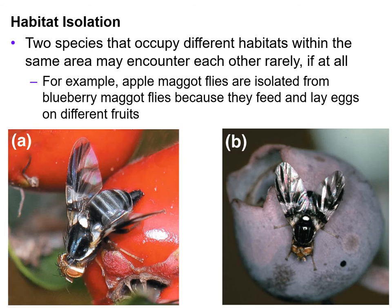The first one is habitat isolation. Two species that occupy different habitats within the same area may encounter each other rarely, if at all. An example is the apple maggot fly and the blueberry maggot fly. Apple maggot flies are isolated from the other because they feed and lay eggs on different fruits — because of what they feed on, where they live, and where they lay their eggs, so they don't interact. Since they don't interact, they can't reproduce together.